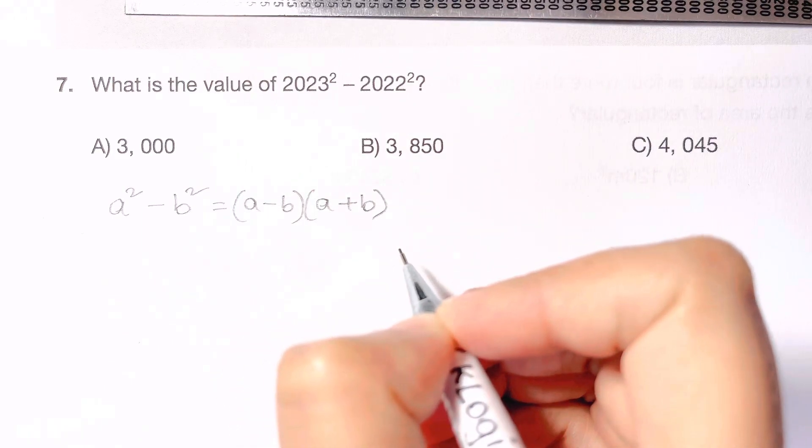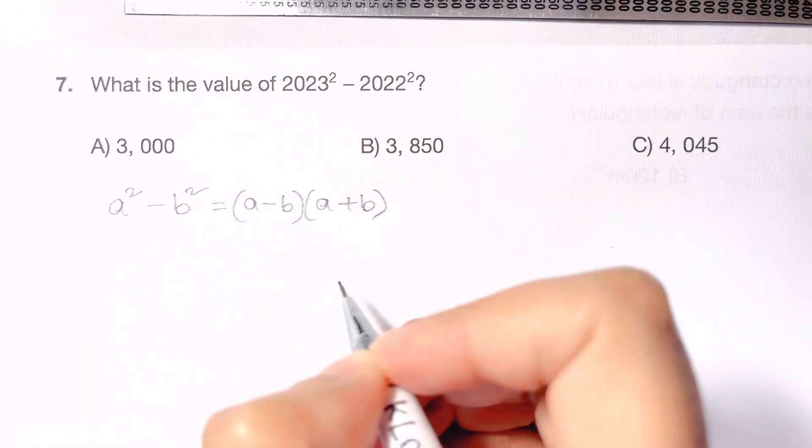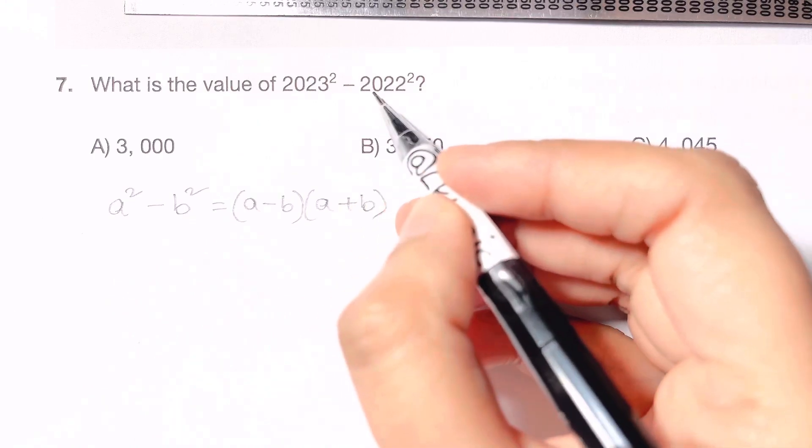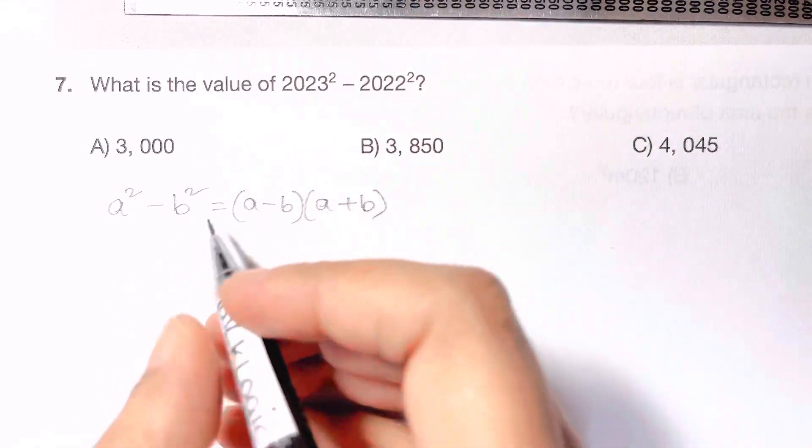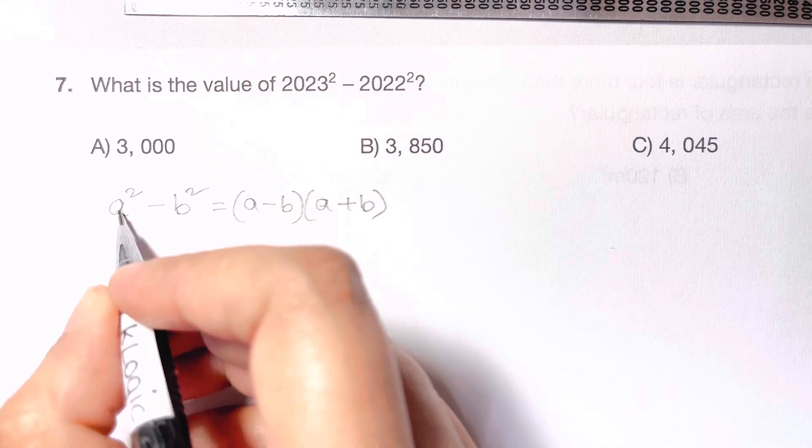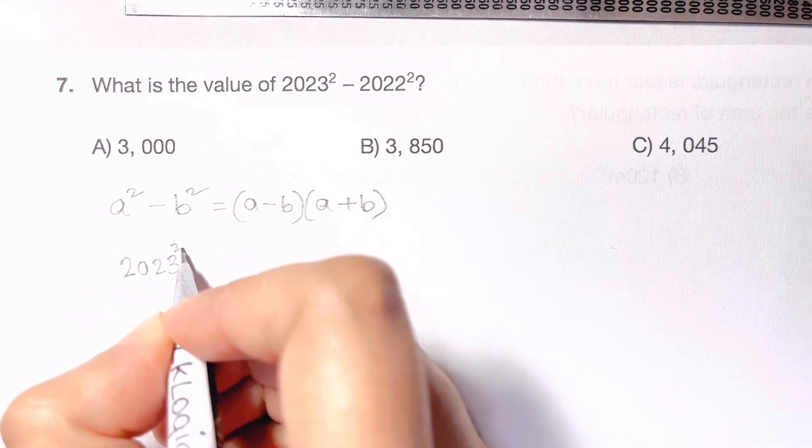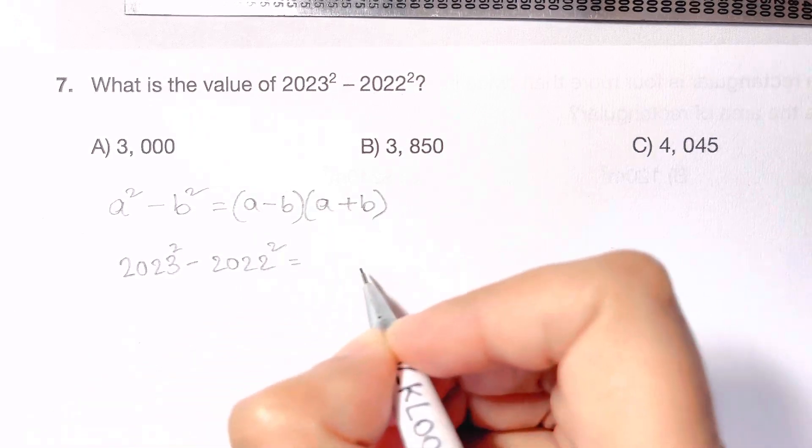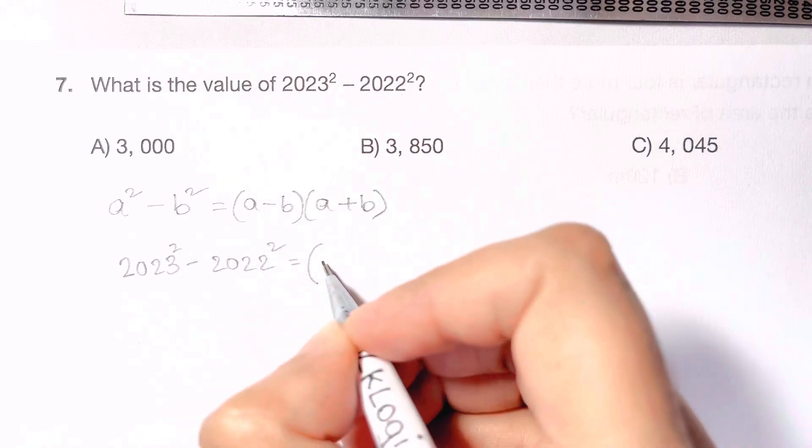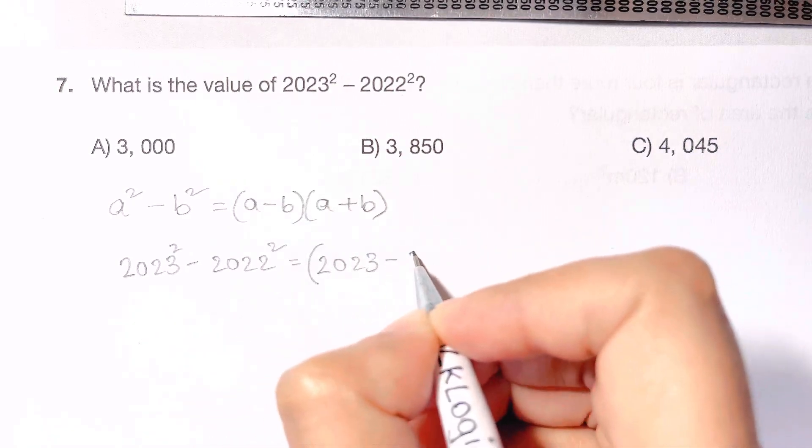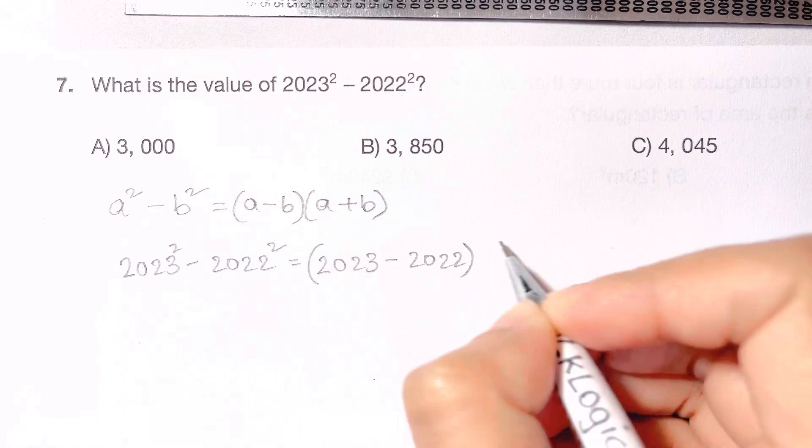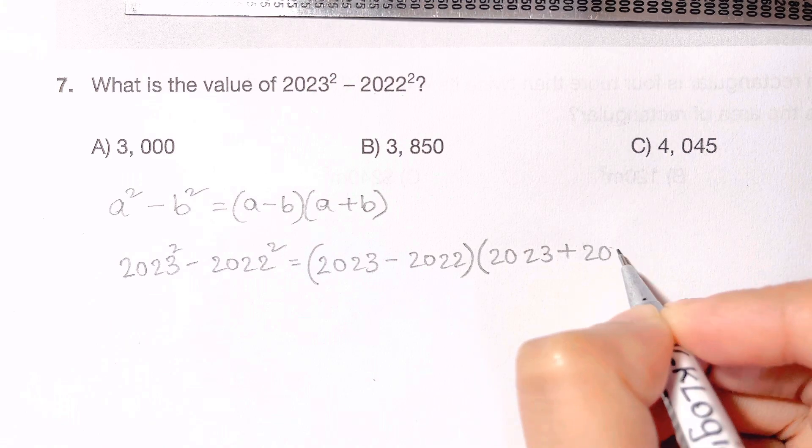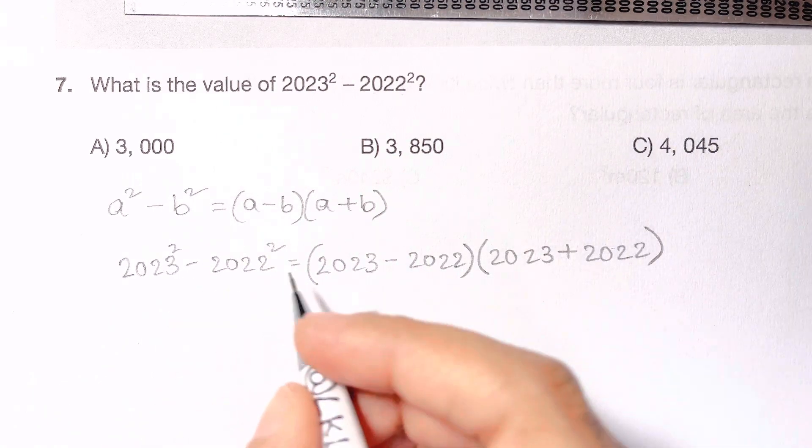And now you might have reached the answer as well. So what is A and B? A is 2023 and B is 2022. Let us substitute it in this. We are going to get 2023 squared minus 2022 squared equals 2023 minus 2022 times 2023 plus 2022. And now what are we going to do?